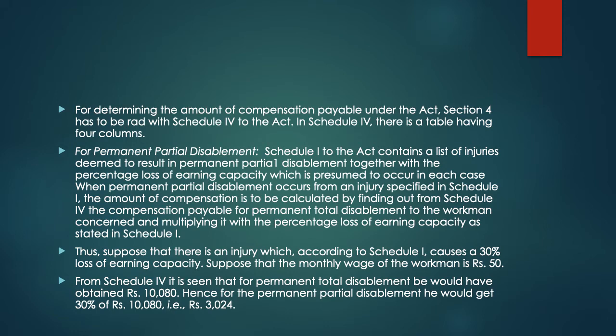When permanent partial disablement results from an injury specified in Schedule 1, the compensation is calculated by finding from Schedule 4 the amount payable for permanent total disablement to the workman concerned, then multiplying it by the percentage loss of earning capacity as stated in Schedule 1. For example, if an injury causes 30% loss of earning capacity and the monthly wage is rupees 50, Schedule 4 gives rupees 10,080 for permanent total disablement, so for permanent partial disablement the workman gets 30% of 10,080, which is rupees 3,024.